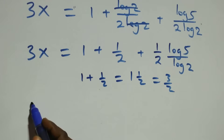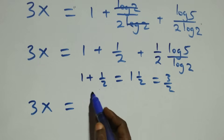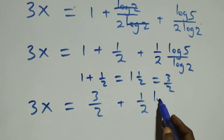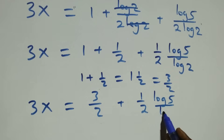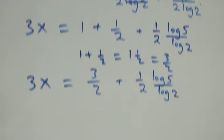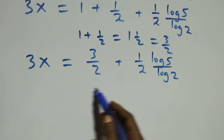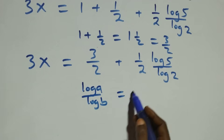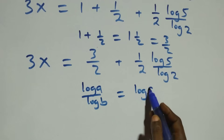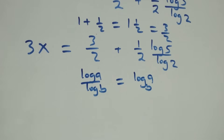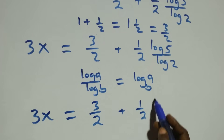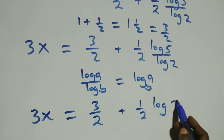So what we have becomes three x equals three over two plus one over two multiplied by log five over log two. Then we apply the change of base formula: log a over log b is the same as log a to base b. So what we have becomes three x equals three over two plus one over two times log five to base two.